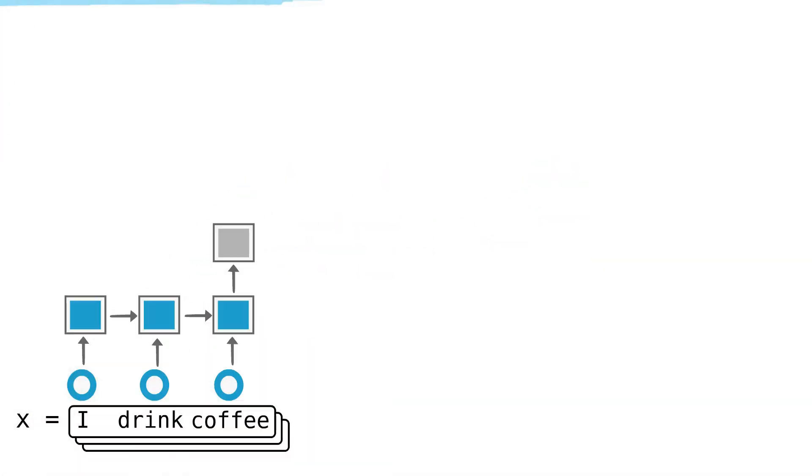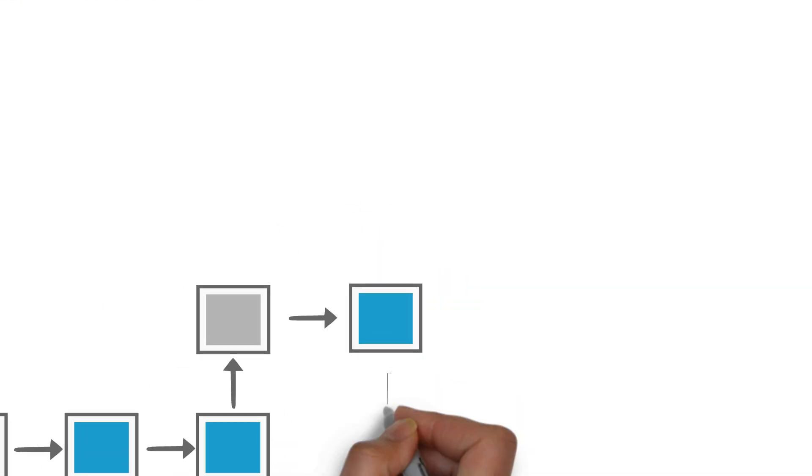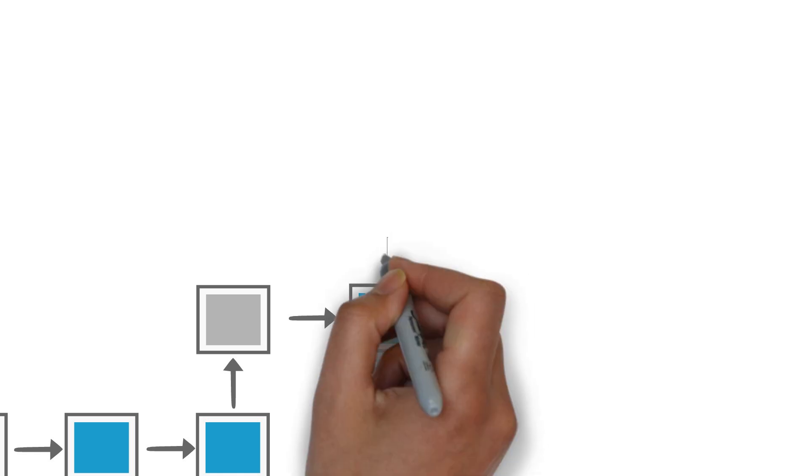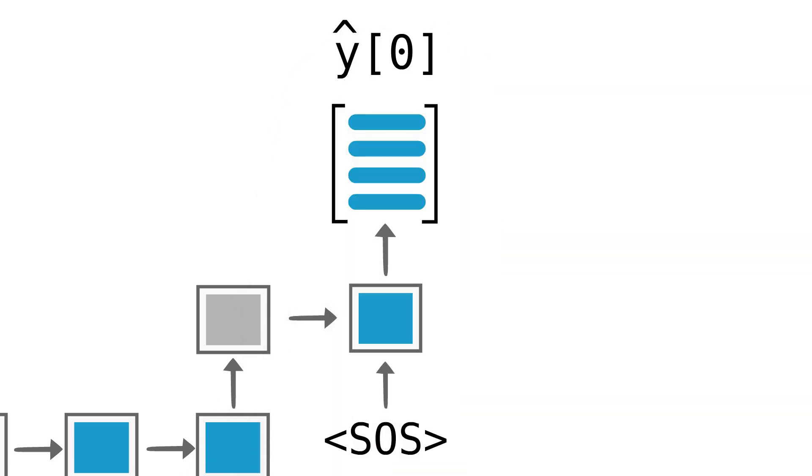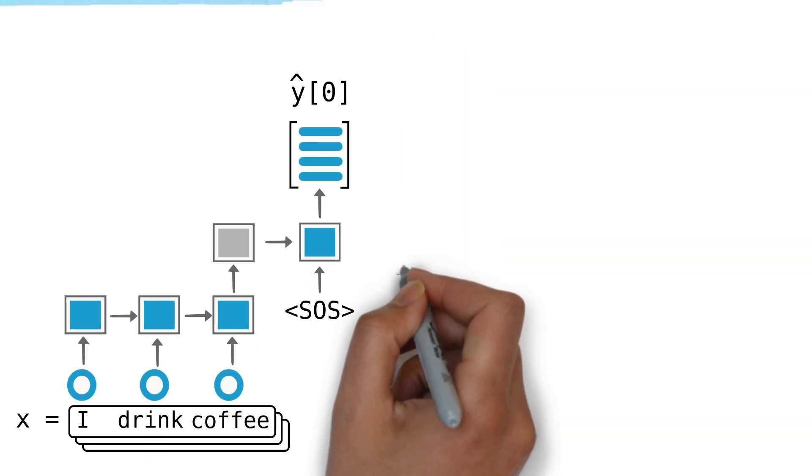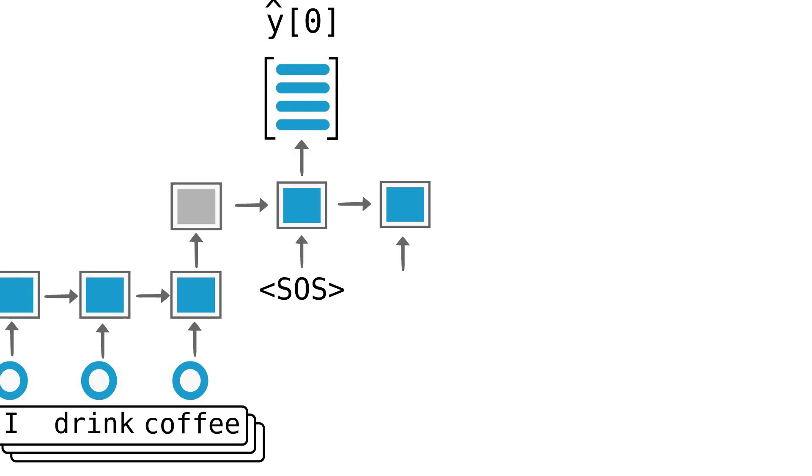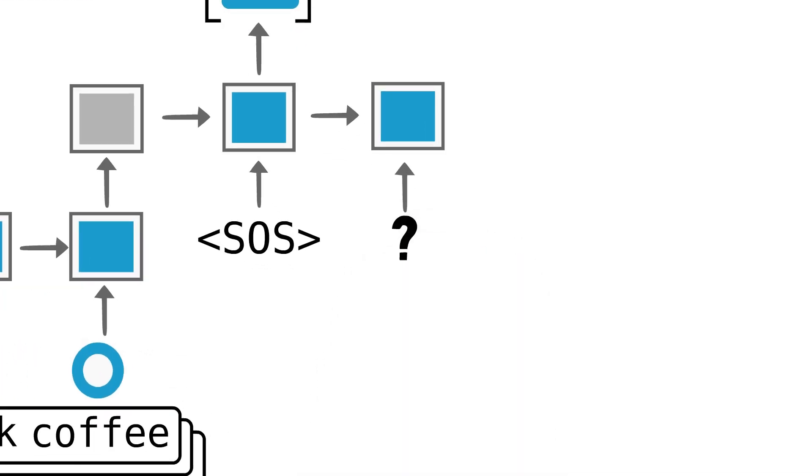We then input the start of sentence token as the first item in the decoder sequence and we get the logits for the first token prediction. But what should we now input as the second step of the decoder?